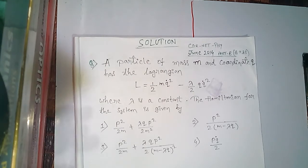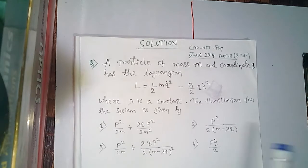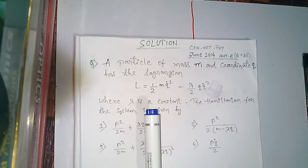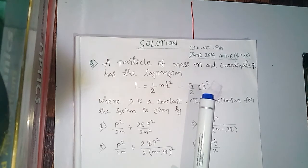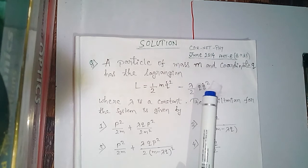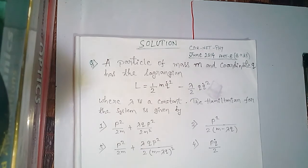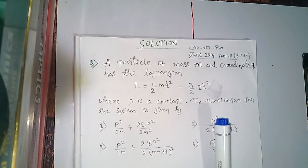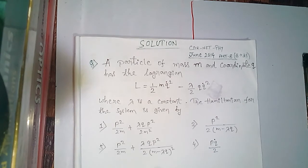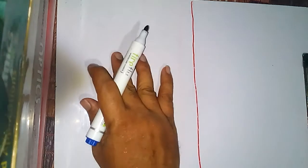First, we recognize whether this Lagrangian is one-dimensional or multi-dimensional. This Lagrangian is one-dimensional because we see only q and not q1, q2, etc., and only q̇ and not q1̇, q2̇, or q3̇. This signifies the Lagrangian is one-dimensional, and therefore the Hamiltonian we obtain will also be one-dimensional.